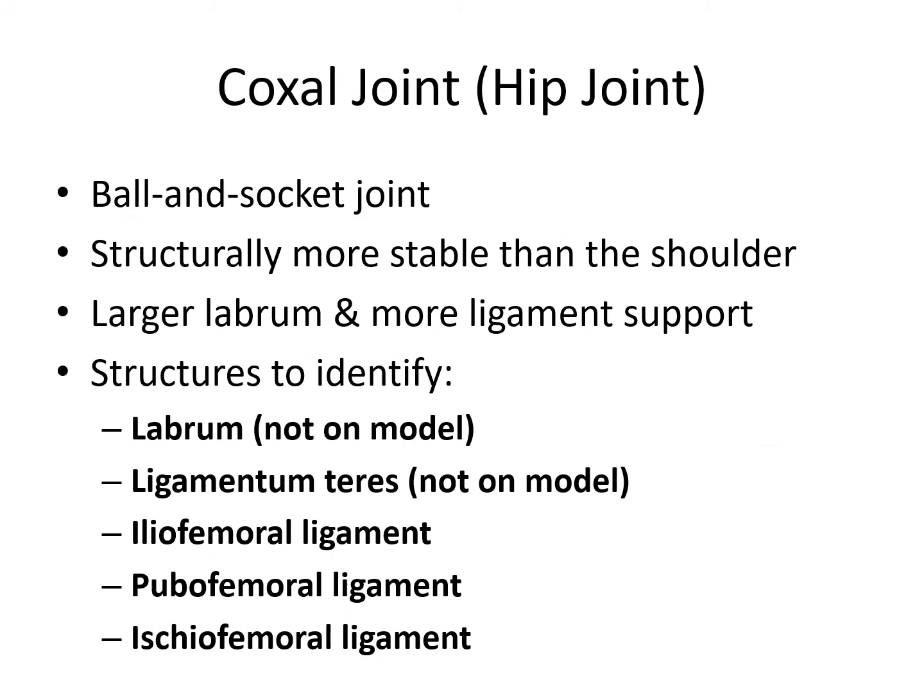Moving on to the coxal joint, also known as the hip joint. This is another ball and socket joint — the ball is the head of the femur and the socket is the acetabulum of the pelvic girdle. Structurally, this is a little more stable than the shoulder because there's less movement permitted. Generally speaking, the more movement allowed at a joint, the more unstable it is — there's always a trade-off between range of motion and stability. Less stable joints are more prone to injury, as seen with the shoulder and knee. There is a larger labrum and more ligament support. Structures to identify: the labrum, ligamentum teres, iliofemoral ligament, pubofemoral ligament, and ischiofemoral ligament.